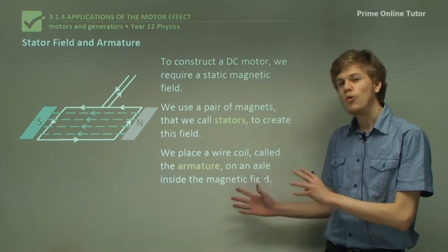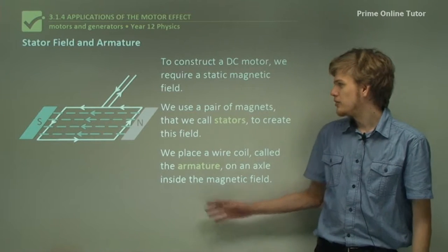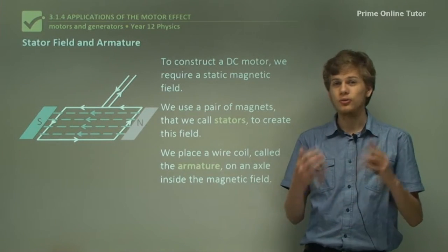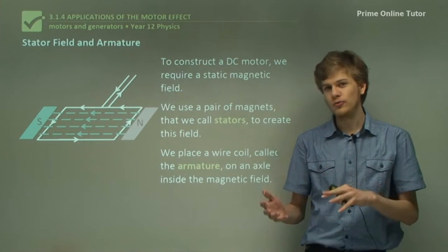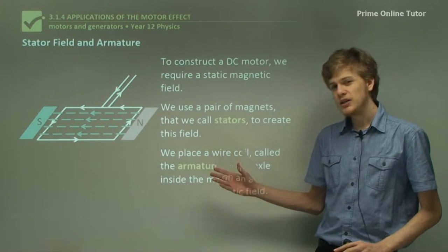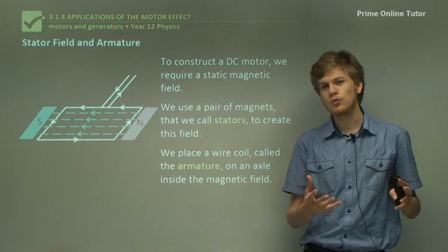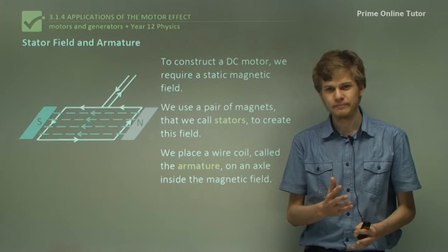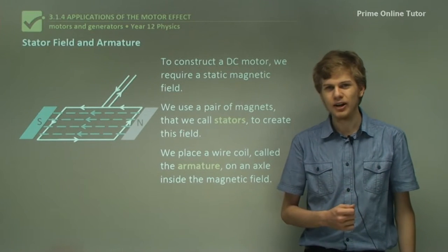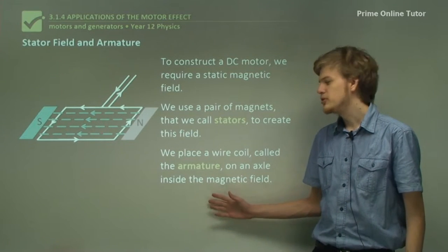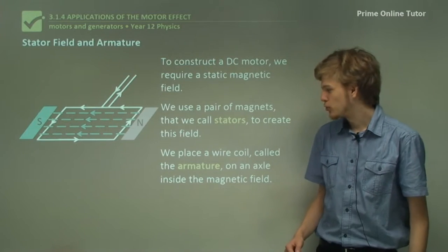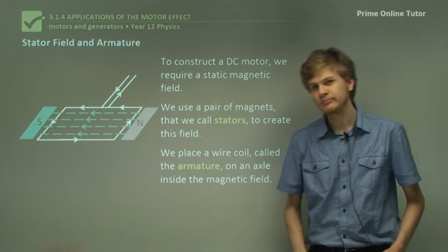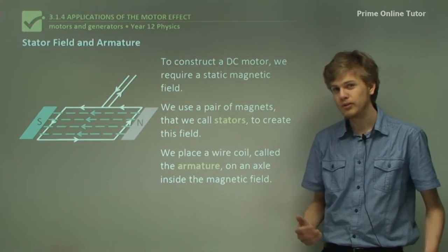And finally, we need a wire coil in the field. We know from our studies on torque and the motor effect that in this situation, when the current flows through the coil in one direction, it will start to rotate. So that's what the armature is for. We can put it on an axle, just straight across — that'll let it spin around.